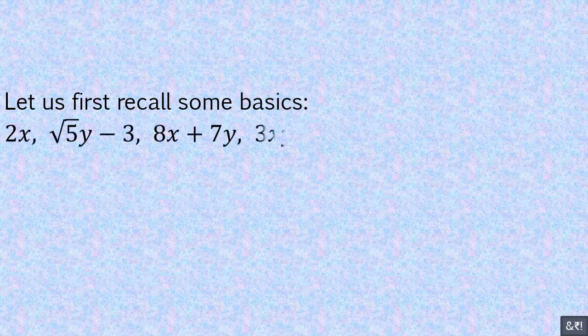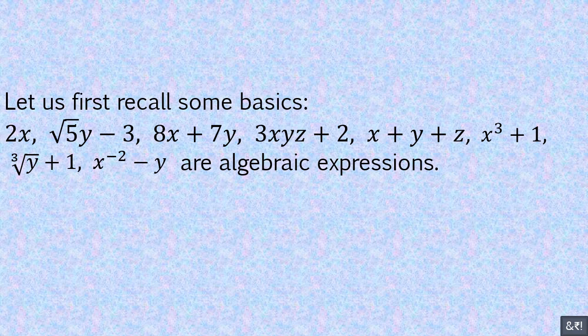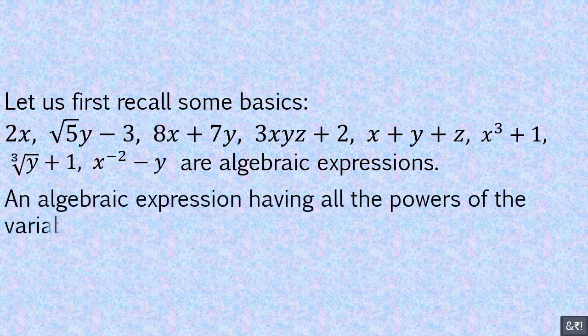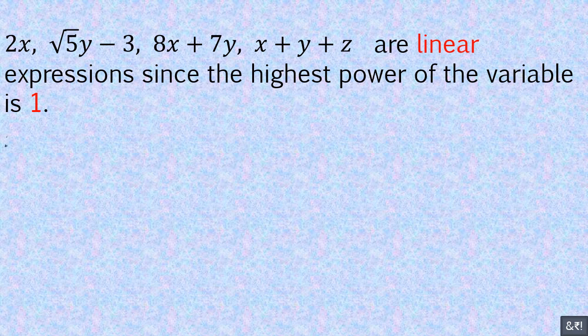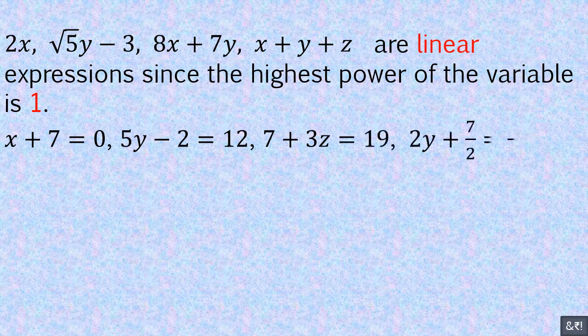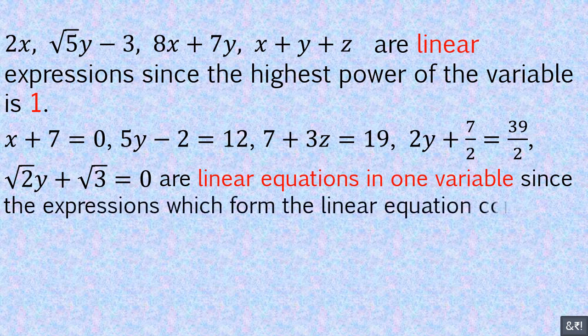2x, root 5y minus 3, 8x plus 7y, 3xy plus 2, x plus y plus z, x cubed plus 1, cube root of y plus 1, and x to the power negative 2 minus y are algebraic expressions. An algebraic expression having all the powers of the variables as whole numbers is known as a polynomial. 2x, root 5y minus 3, 8x plus 7y, and x plus y plus z are linear expressions since the highest power of the variable is 1.